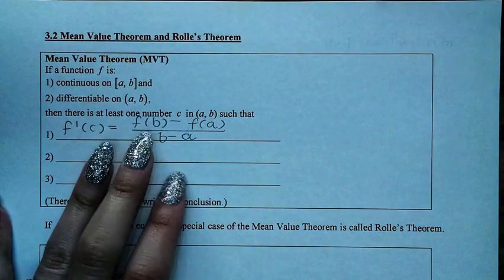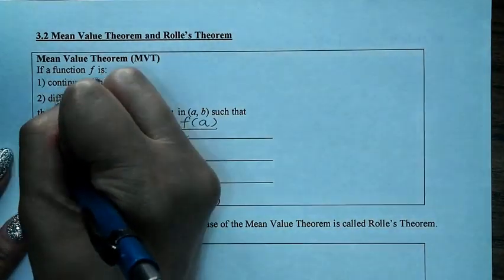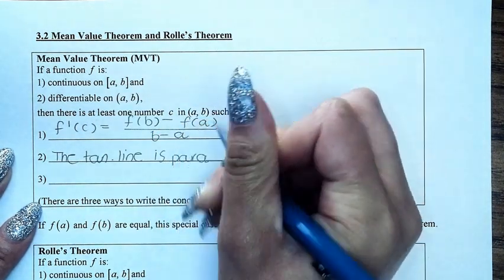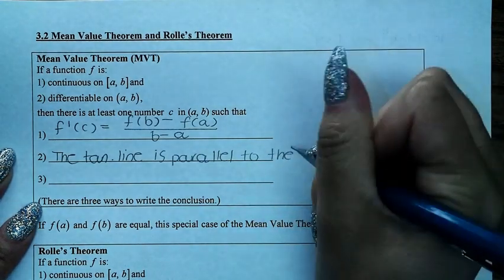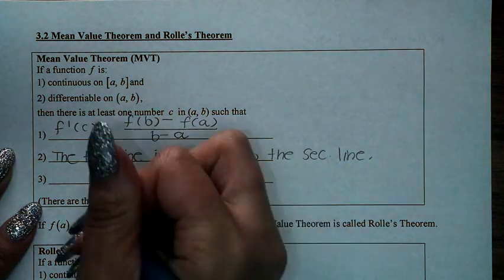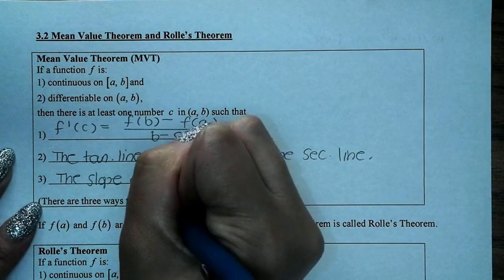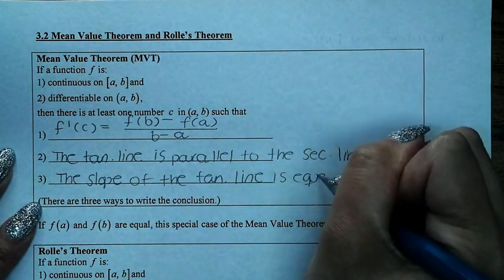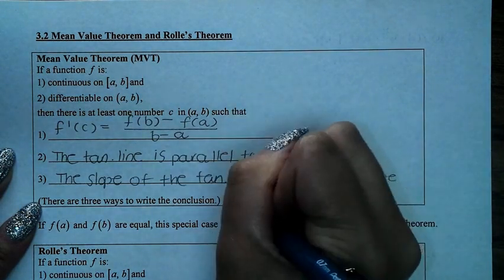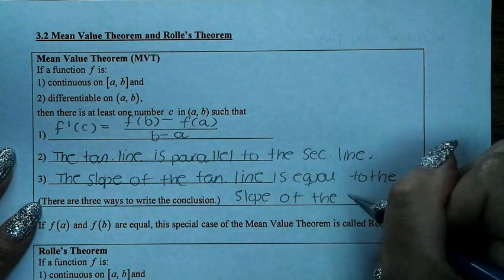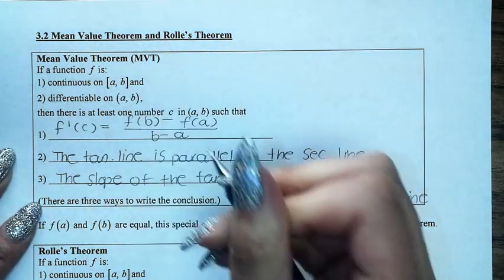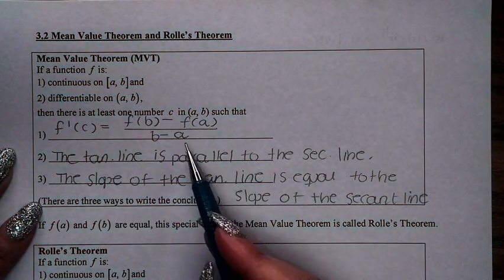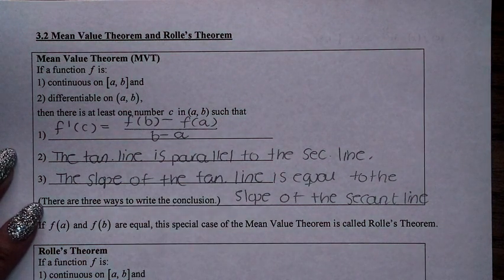What the theorem is telling you verbally is that the tangent line is parallel to the secant line. In other words, the slope of the tangent line is equal to the slope of the secant line. These three are equivalent. You have two conditions, so you know that if these two conditions are met, then there exists at least one c inside the interval (a,b) such that f prime of c is equal to f(b) minus f(a) divided by b minus a.